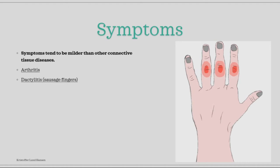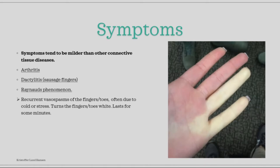Raynaud's phenomenon is a common symptom from systemic sclerosis. It occurs when the blood vessels in the fingers or toes start to spasm, leading to temporary ischemia. This is seen as the fingers or toes turn white, and it typically lasts for a few minutes before turning back to normal.